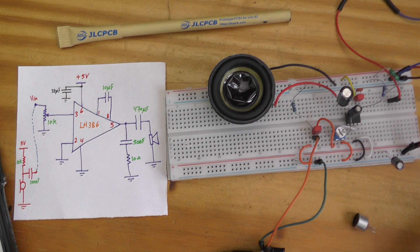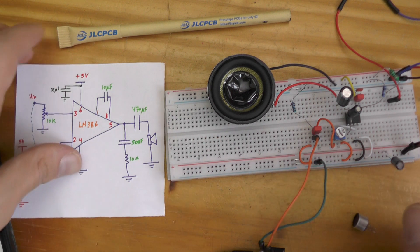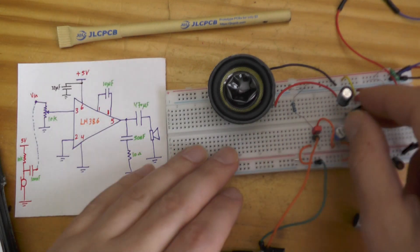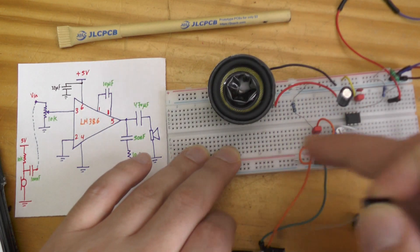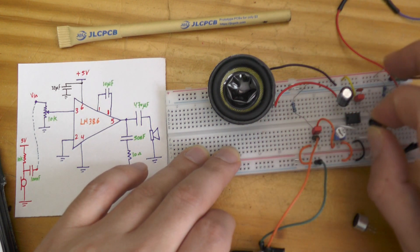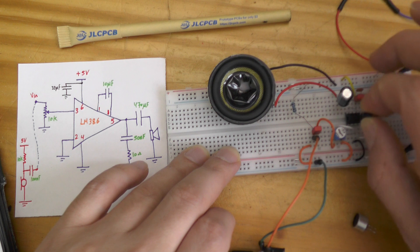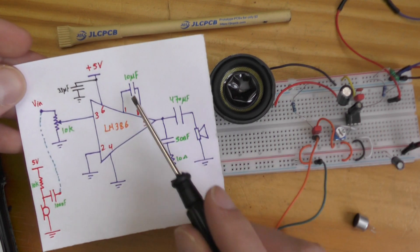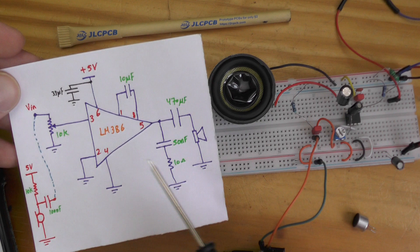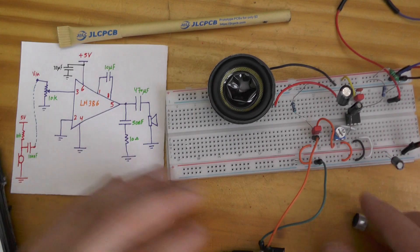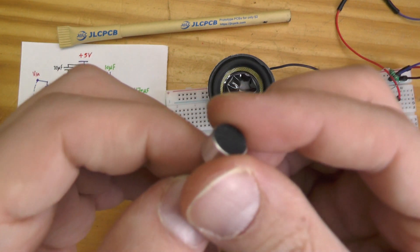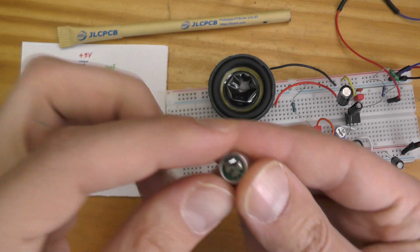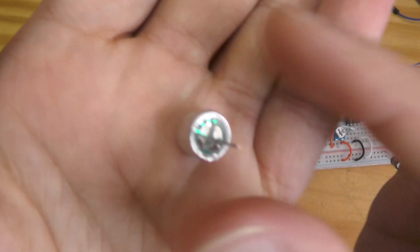Look at this sound now. Without this one, the gain will be 20 instead of 200. So let's test it. Look at this, this is a gain of 20, and this is a gain of 200. So we tested some components and how they affect the performance of this amplifier. So now let's test the microphone.